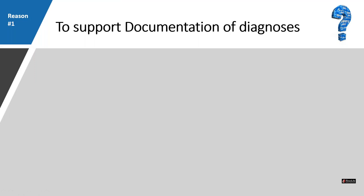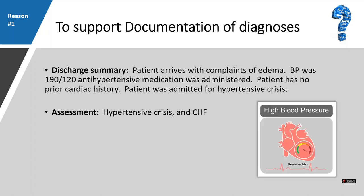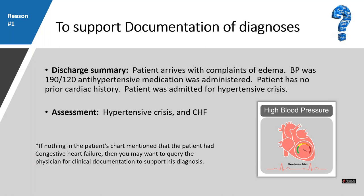Reason one: to support documentation of a diagnosis. For example, a discharge summary states the patient arrived with complaints of edema, blood pressure was 190 over 20, anti-hypertensive medication was administered, the patient has no prior cardiac history, and was admitted for hypertensive crisis assessment. But the final assessment also lists CHF. Since nothing else in the chart mentions congestive heart failure, you would query the physician for clinical documentation to support that diagnosis.